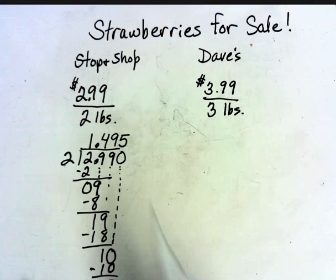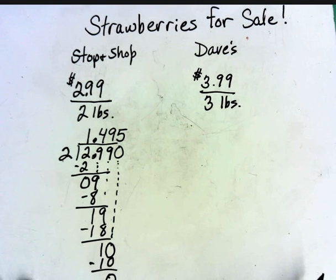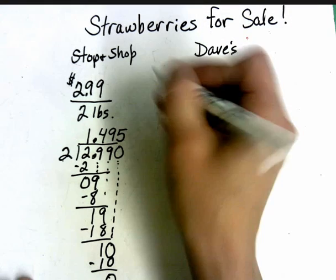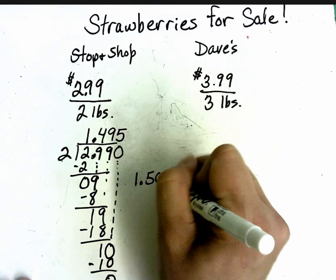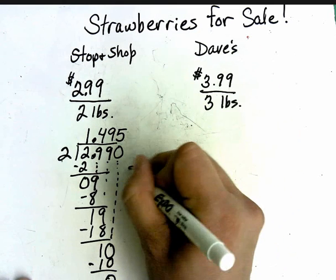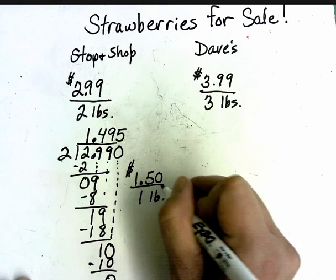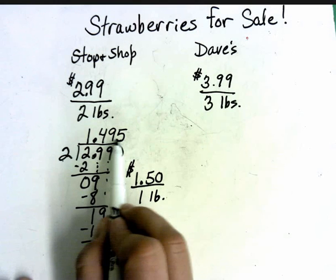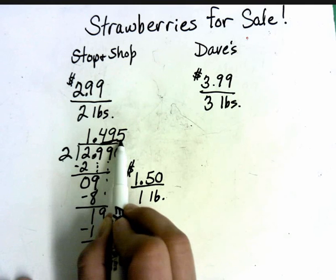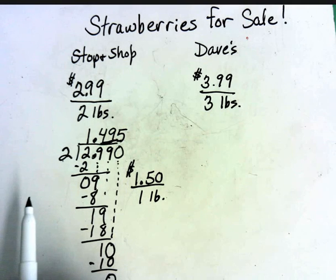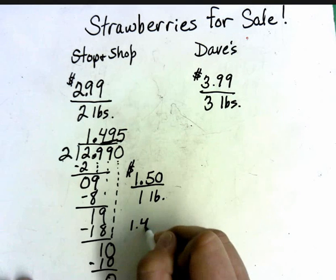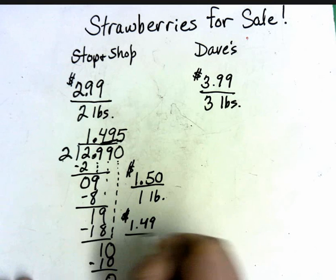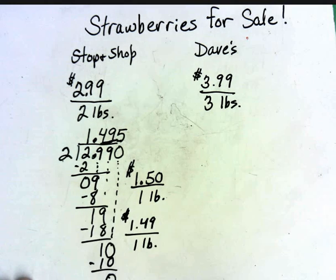Now in money, this could mean two different things. Can somebody tell me how much money it is per pound at Stop and Shop? $1.50 per pound — good job. She took 49 cents and rounded it up because of this five. Some of you might have put $1.49 per pound if you didn't round — in this case, you would still be correct.